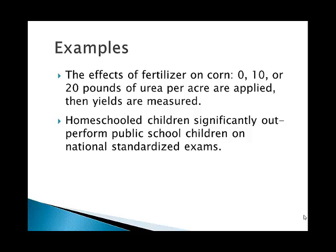Here are two examples. Suppose we want to study the effects of a certain fertilizer on corn crop. We might apply urea, a source of nitrogen, to our corn crop at rates of 0, 10, or 20 pounds per acre. We could then observe the difference in yield between those three groups. In this case, we are imposing the treatment of 0, 10, or 20 pounds of urea per acre and observing the results — therefore, this would be an experiment.